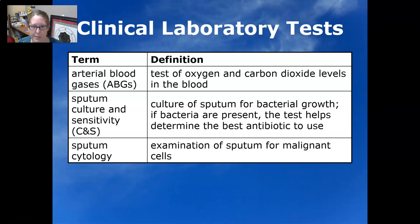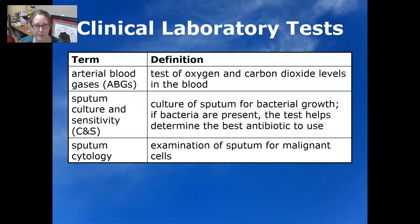The first one is arterial blood gases, also known as ABGs. This is a test done on arterial blood to test oxygen and carbon dioxide levels in the blood. The advantage of doing it in arterial blood is that you can check how the lungs are functioning, how they're oxygenating the blood and removing carbon dioxide. This test is often drawn by respiratory therapists but can also be drawn by lab techs.